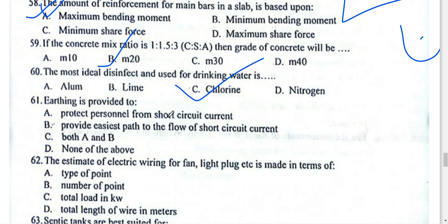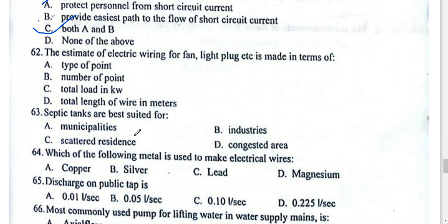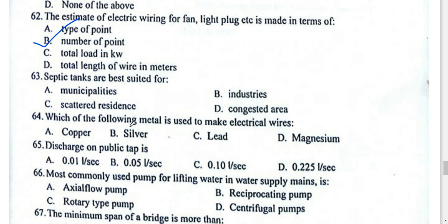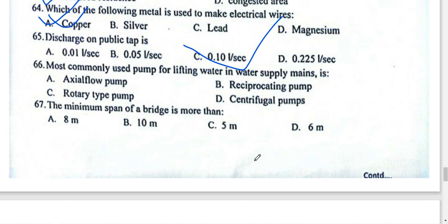The estimate of electric wiring or fan/light is measured in number of points. Electric wires are made from copper or aluminium. The discharge at a public standpost is a minimum of 0.10 to a maximum of 0.25 litres per second. The most commonly used pump for lifting water in supply mains is the centrifugal pump.